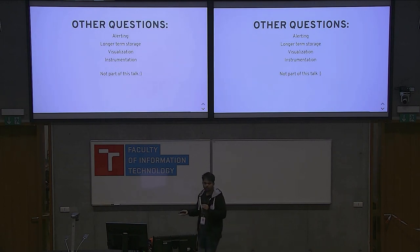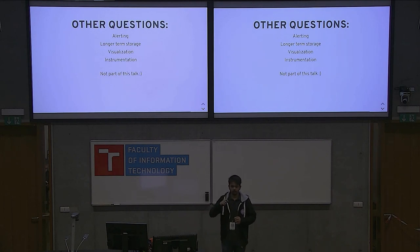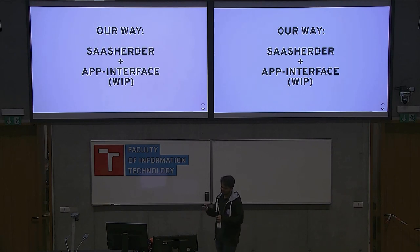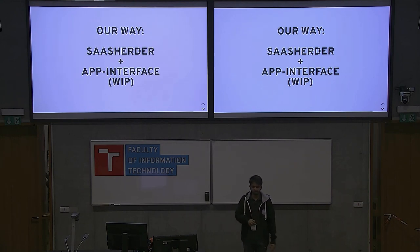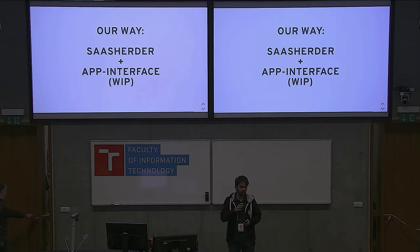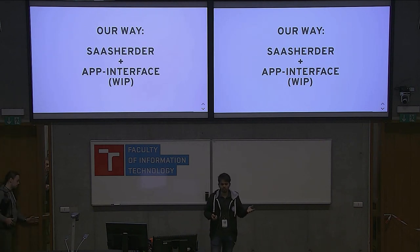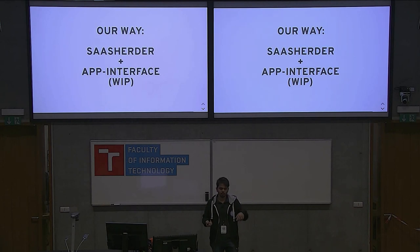The other questions that are unsolved before moving on to the pipeline: alerting, long-term storage, visualization, and how do you actually instrument your apps to work with this model? If you still want to chat about it, just ping me offline. Our way of doing the actual CD is that we have a tool called SaaS Herder, and we also have a project called the App Interface, which is a GraphQL wrapper over your application configuration. You can have a GraphQL endpoint where you can query all of your monitoring configuration, and SaaS Herder is the CD part where you have deployment manifests and a tracking repo. SaaS Herder will take all of your tracking repos, pick up the Kubernetes manifests, and apply them to your clusters.